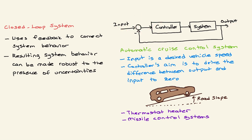The controller's aim is to drive this error to zero. In a closed-loop system we can make the resulting system behavior robust to the presence of uncertainties. For example, you can think one uncertainty as the road slope. Regardless of you are climbing up or down, your controller minimizes this error, drives it to zero, such that the output speed will always be equal to the input speed in an automatic cruise control system.